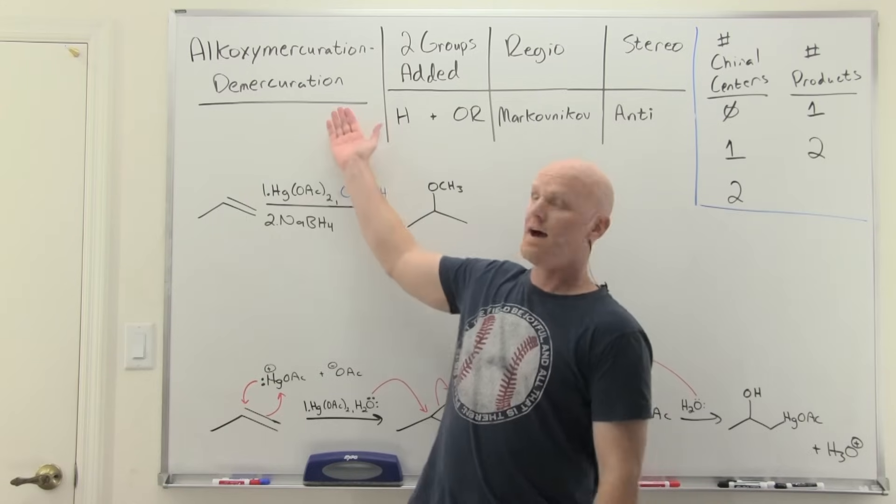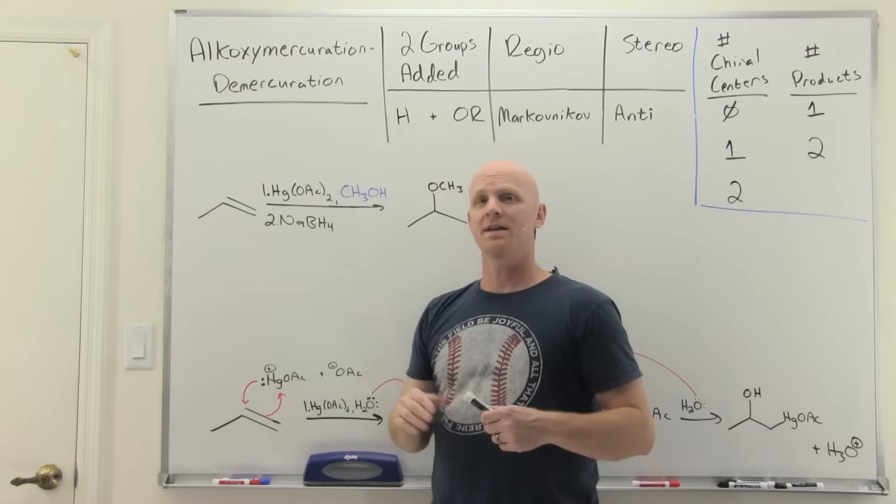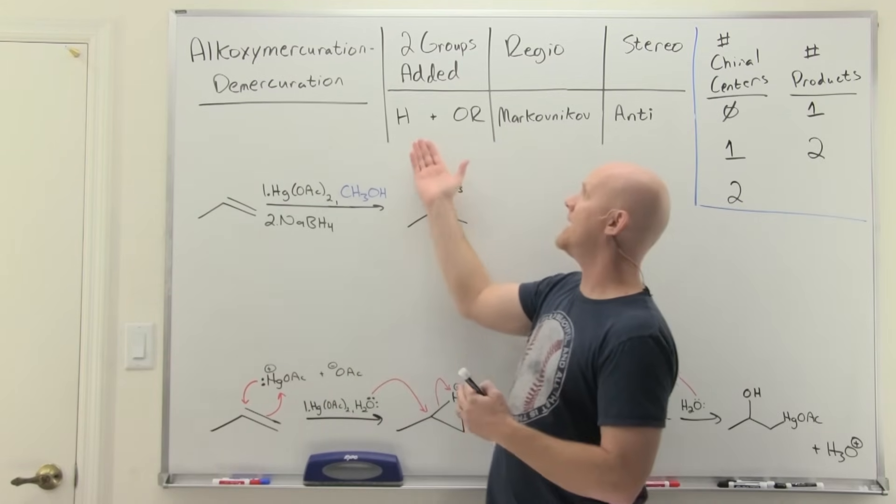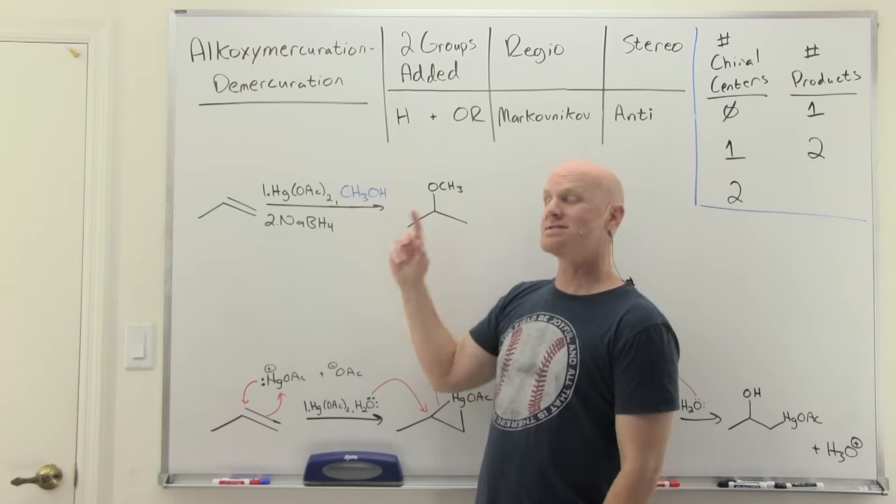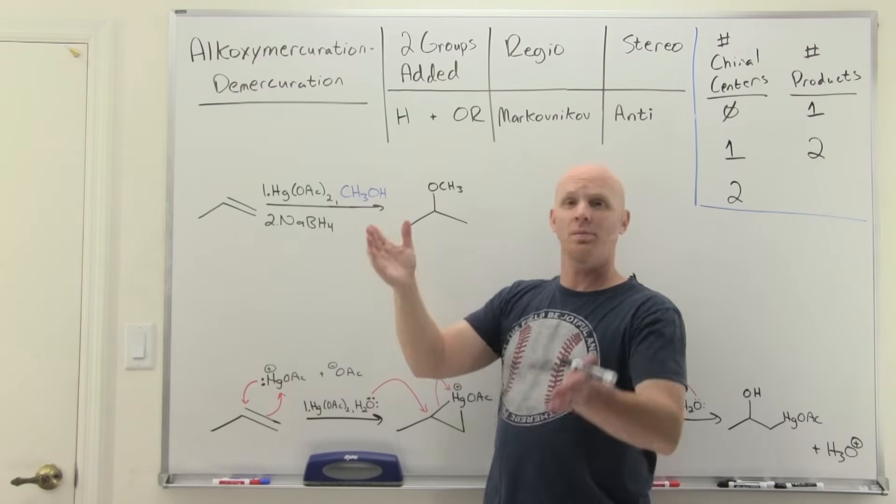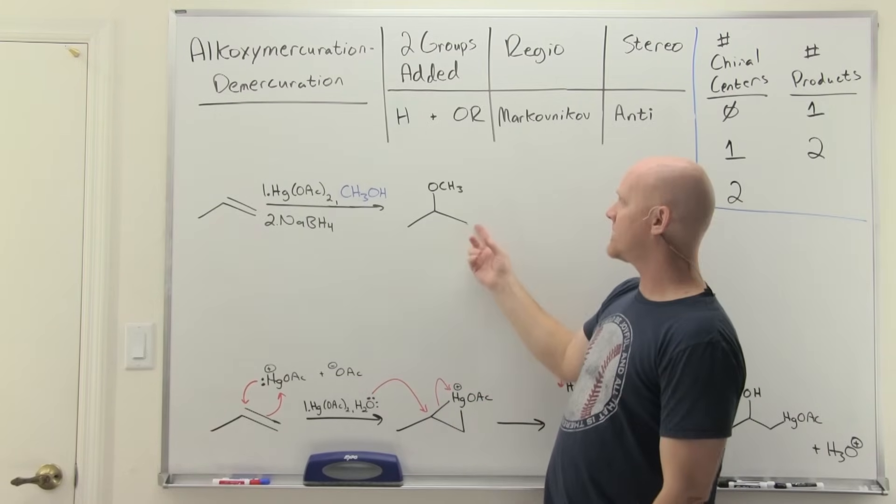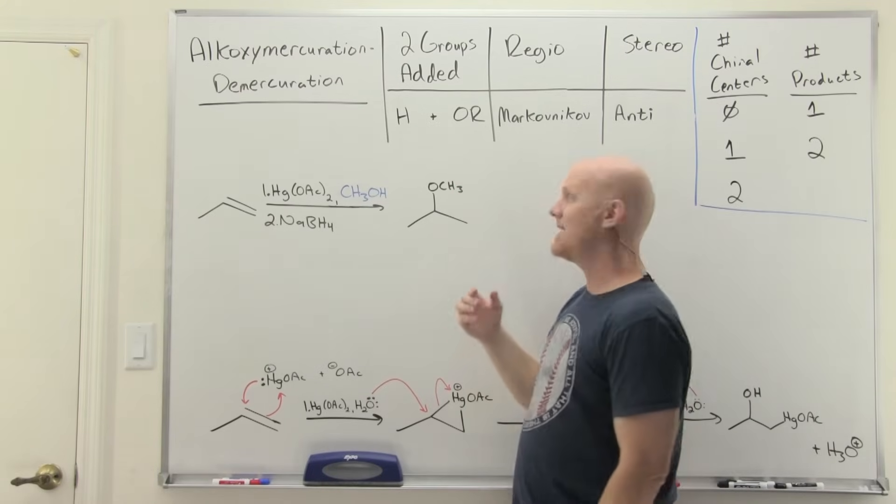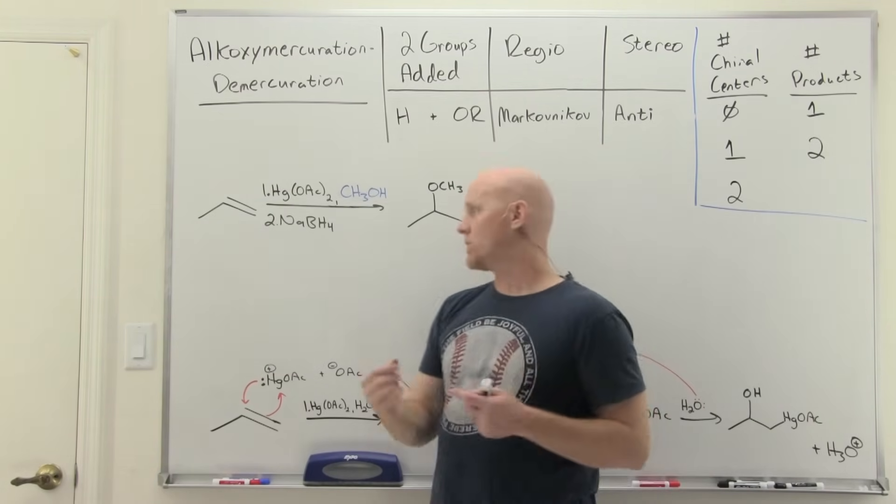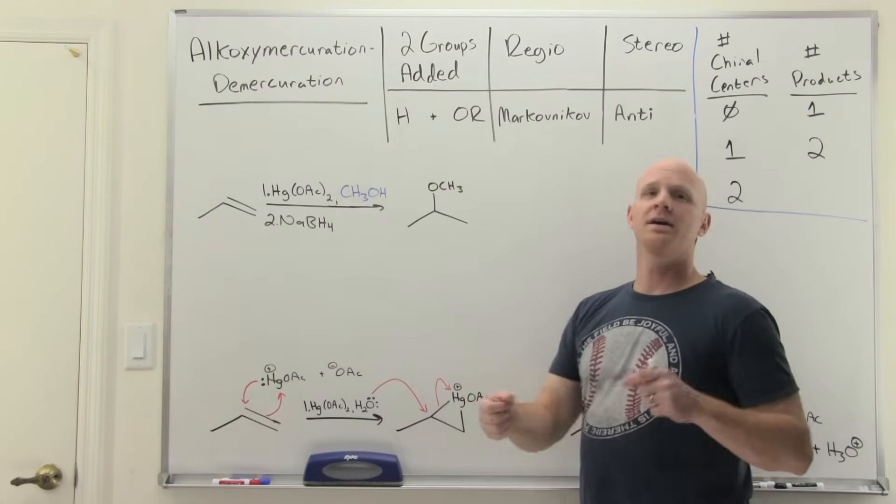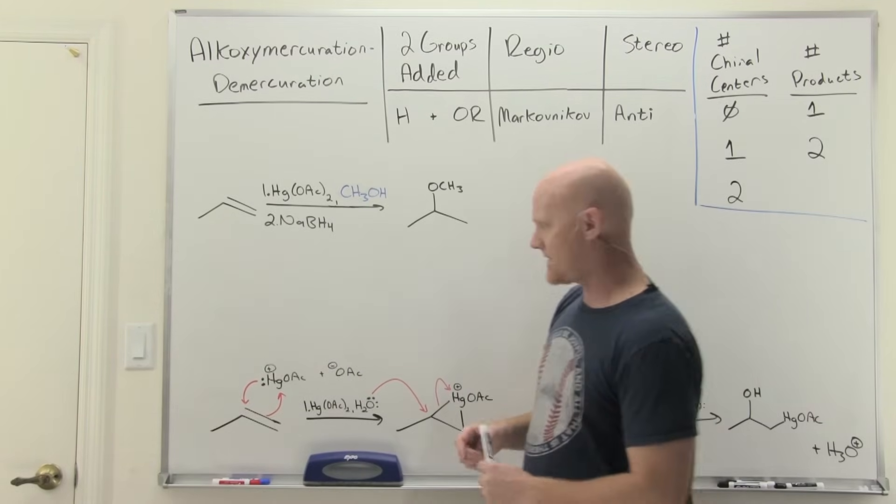All right, the next alkene addition reaction we're gonna look at is alkoxymercuration demercuration, and very analogous to oxymercuration demercuration, but again instead of adding H and OH now we'll be adding an H and an OR, all depending on which alcohol used in step one. So the only difference in the reagents, instead of using water here we'll pick an appropriate alcohol. All right, so it's still Markovnikov, so H on the less-substituted side and the OR in this case OCH3 on the more substituted side. And it's an anti addition in case you form two chiral centers. So when you do backside attack on that mercurinium ion leads to the two things that have added be on opposite sides. All right, so let's take a look at that mechanism.